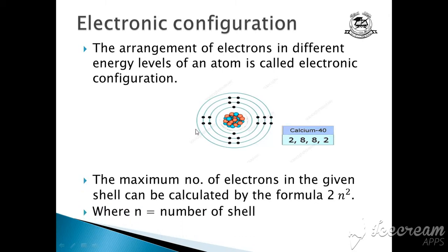How many maximum electrons can come in any shell? We have a formula for that: 2n². n is number of shell. If we are counting first shell, we will write here 1. Second shell we will write here 2. Let's see.